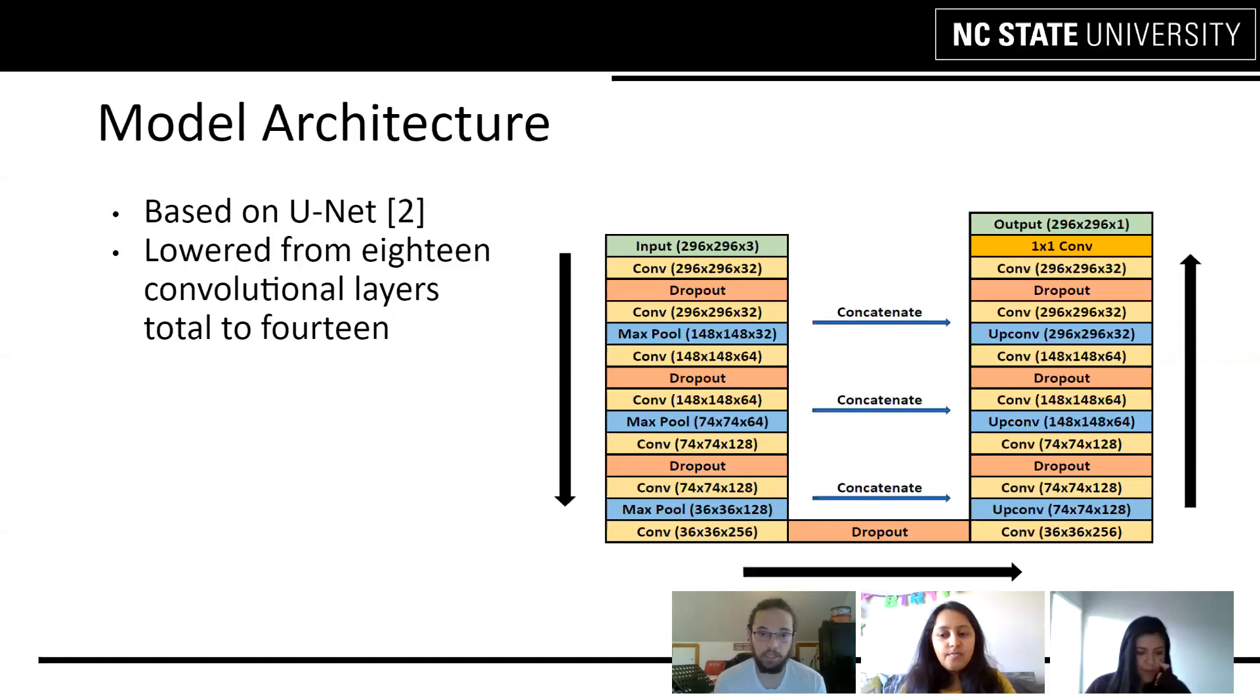We used dropout layers to try to avoid overfitting, and our loss function was the binary cross entropy function, since we were comparing between roads or background.